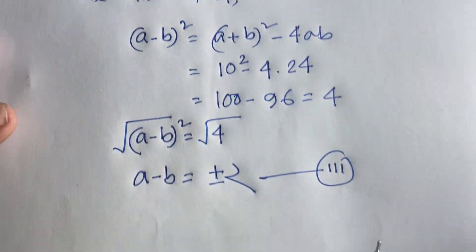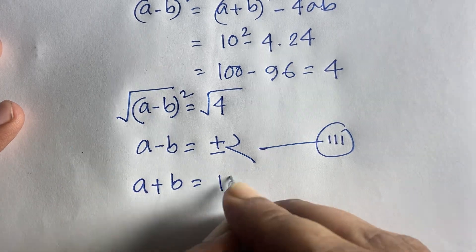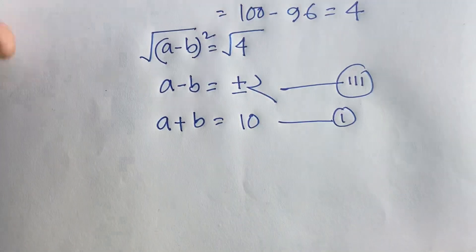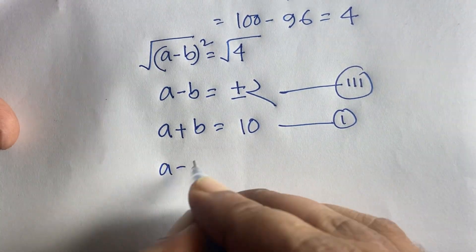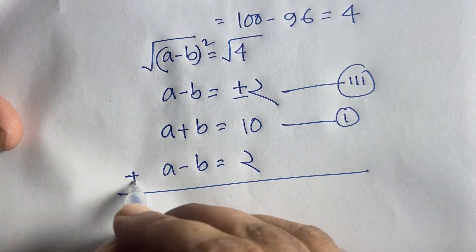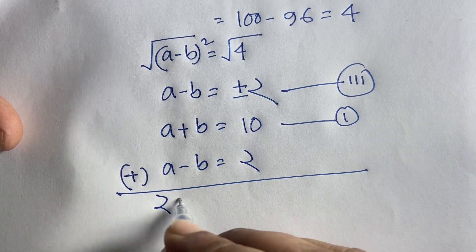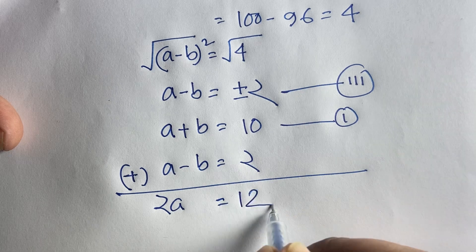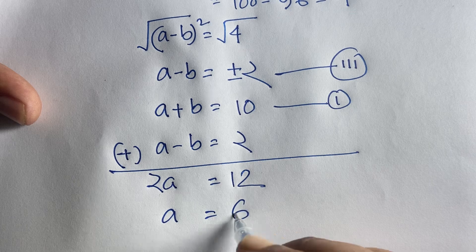Our first equation is a plus b is equal to 10. Taking the positive value, a minus b is equal to 2. Adding both equations: a plus a gives 2a, and plus b minus b gives 0, so 2a is equal to 12. Dividing both sides by 2, a is equal to 6.